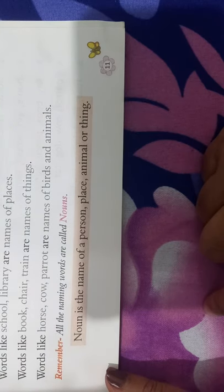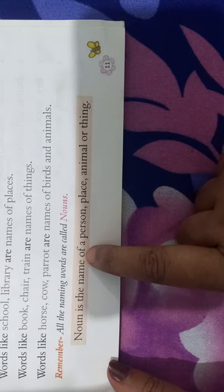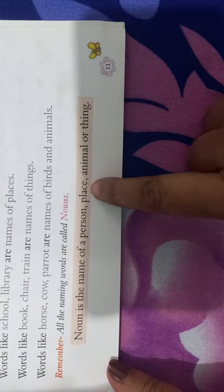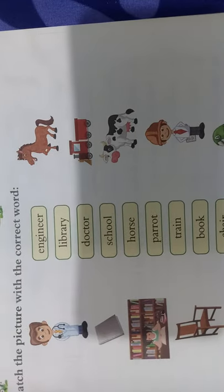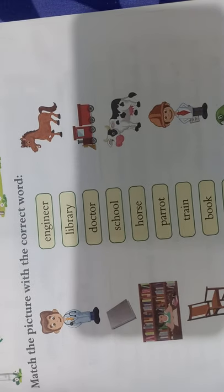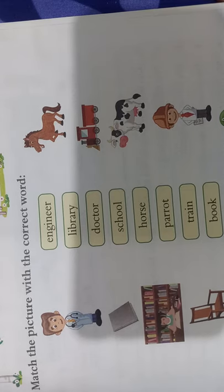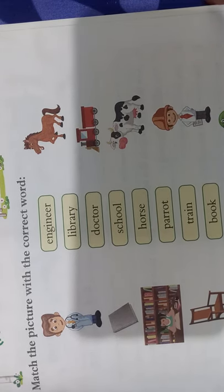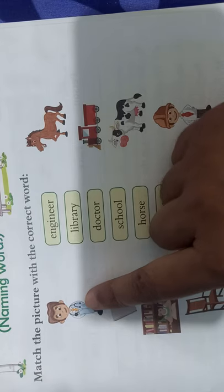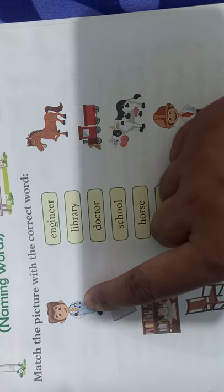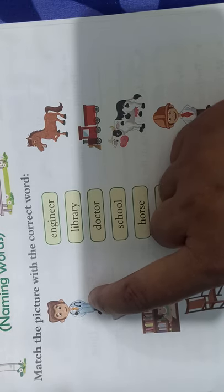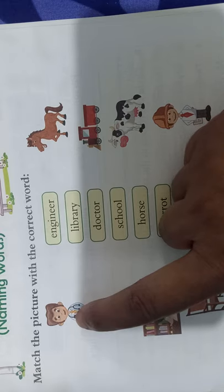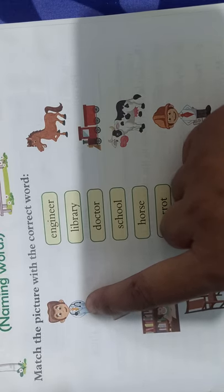Let's say it again. Noun is the name of a person, place, animal, birds or thing. There are some nouns given in the picture. You have to match the picture with the correct word. What do you see here? This man is wearing a stethoscope around his neck. So this shows that he is a doctor.